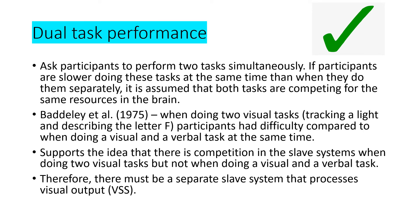A strength is dual task performance. This involves asking participants to perform two tasks simultaneously. If participants are slower doing two tasks at the same time than separately, it is assumed both tasks compete for the same resources in the brain. Baddeley et al. in 1975 asked participants to do two visual tasks simultaneously: track a light and describe the letter F. Participants had more difficulty than when doing a visual and a verbal task simultaneously, supporting the idea of competition within slave systems for two visual tasks but not for a visual and verbal task, because they use separate components - confirming a separate slave system for visual output: the visuospatial sketchpad.